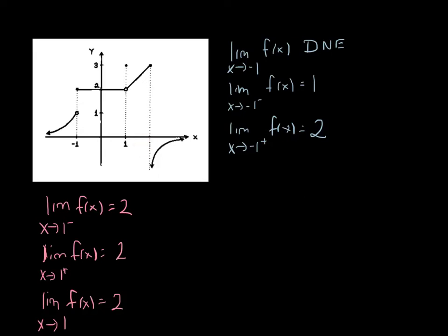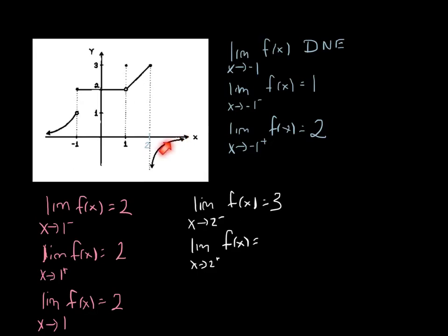Now this last place is kind of interesting. We'll call this x equals 2 — that's not labeled on there. The limit as x approaches 2 from the left: our function is getting closer and closer to 3. And as x approaches 2 from the right, our function is going to negative infinity, so that limit doesn't actually exist. We can either say the limit is negative infinity or just that it doesn't exist. Since the limit from one side doesn't even exist, the limit as x approaches 2 of f of x definitely does not exist.